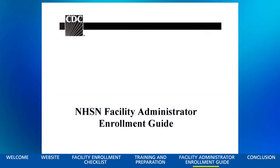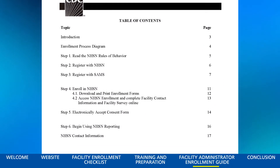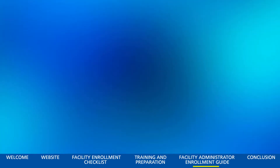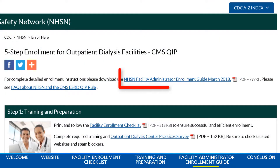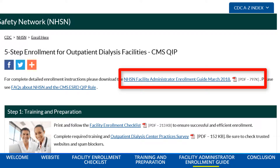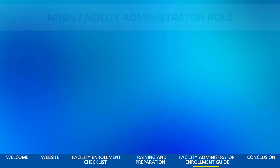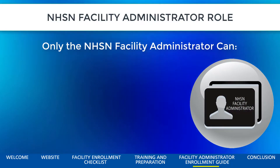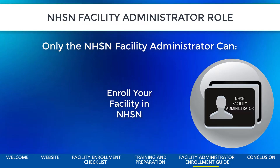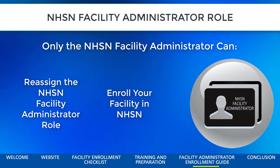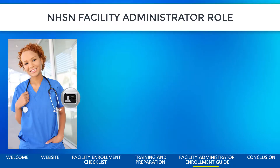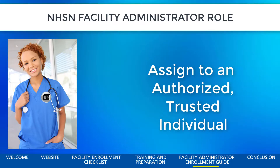The last document needed in Step 1 is the NHSN Facility Administrator Enrollment Guide. This guide provides detailed enrollment information for the NHSN Facility Administrator, and can be found at the top of the 5-Step Enrollment for Outpatient Dialysis Facilities CMS QUIP page. Please note that the NHSN Facility Administrator is the only individual who can enroll your facility in NHSN or reassign the NHSN Facility Administrator role. Be sure to give this role to an individual who is authorized to perform these functions within your facility or organization.